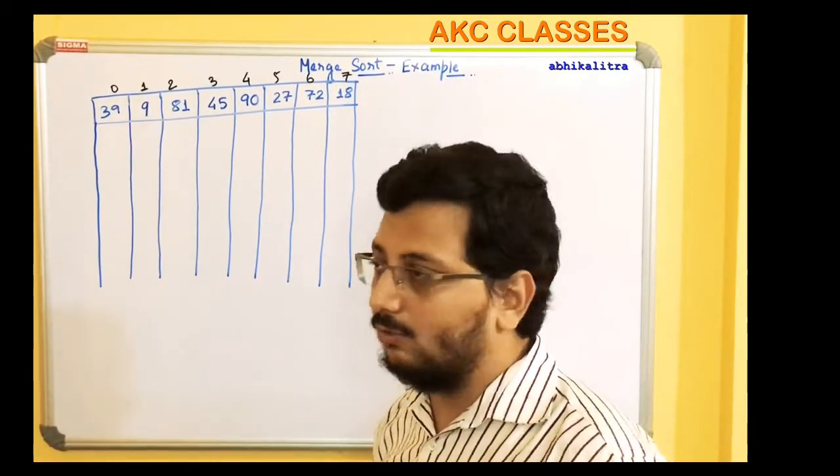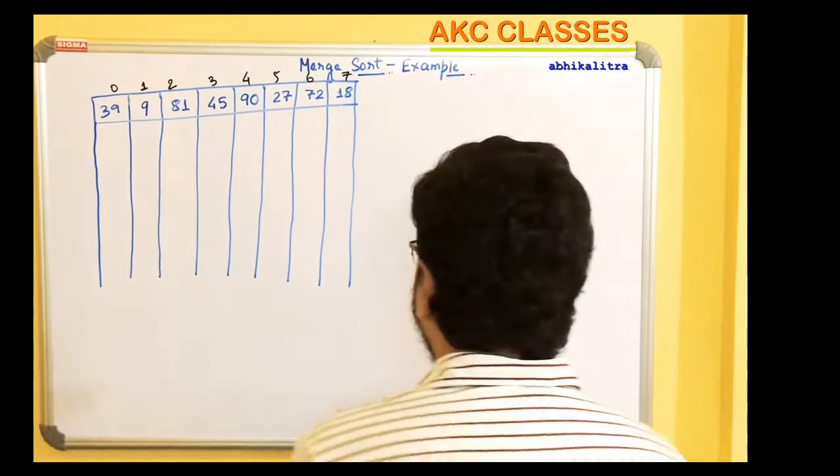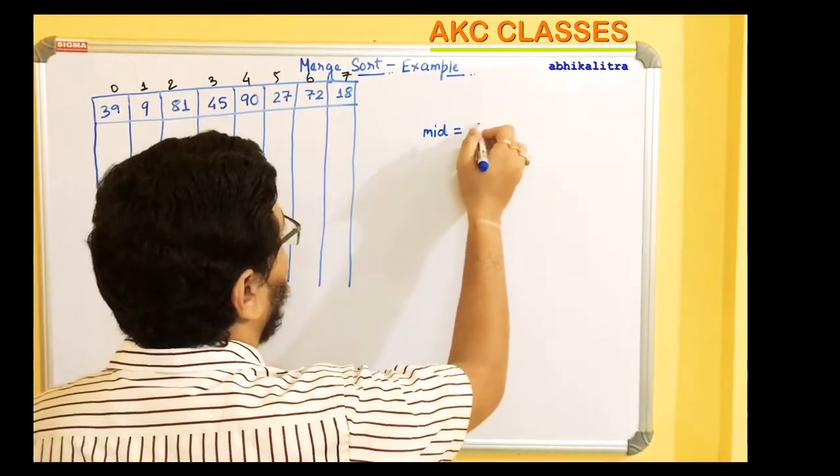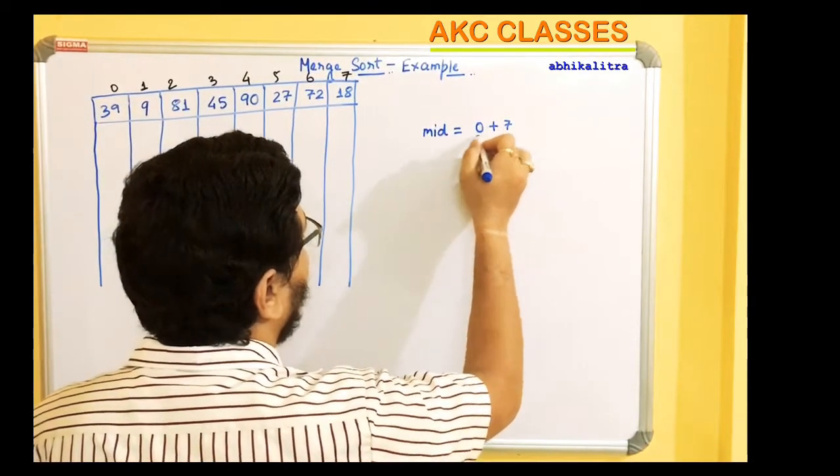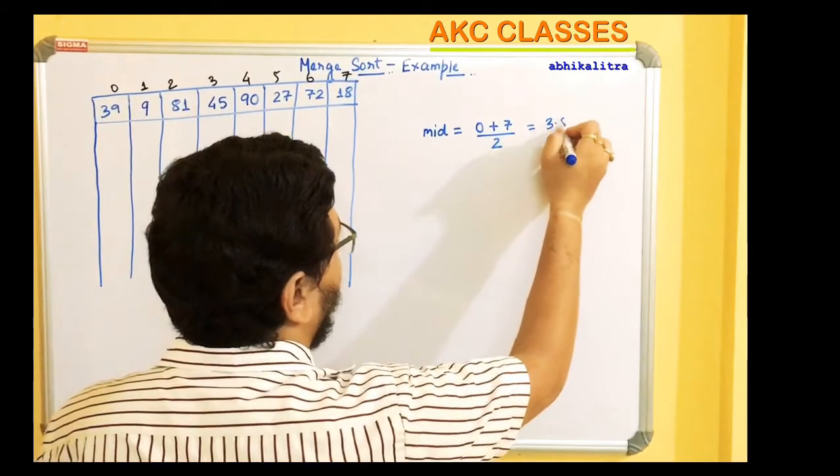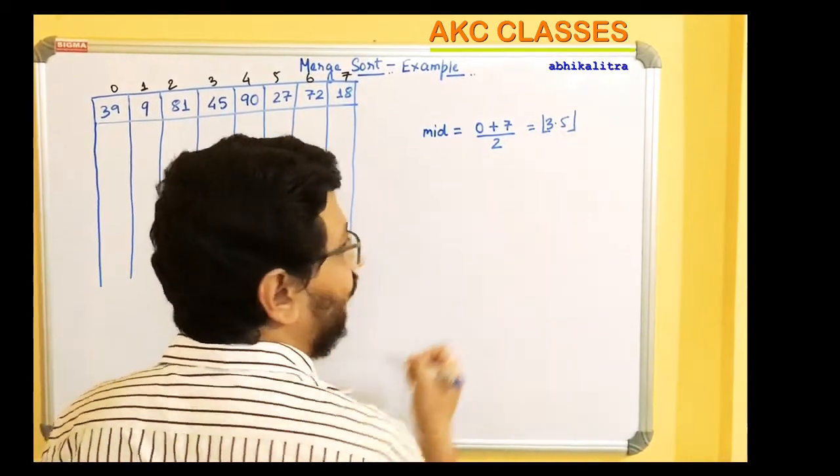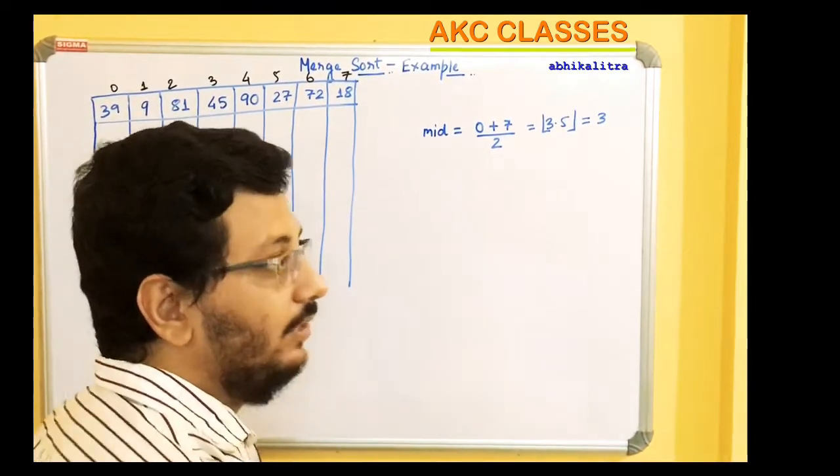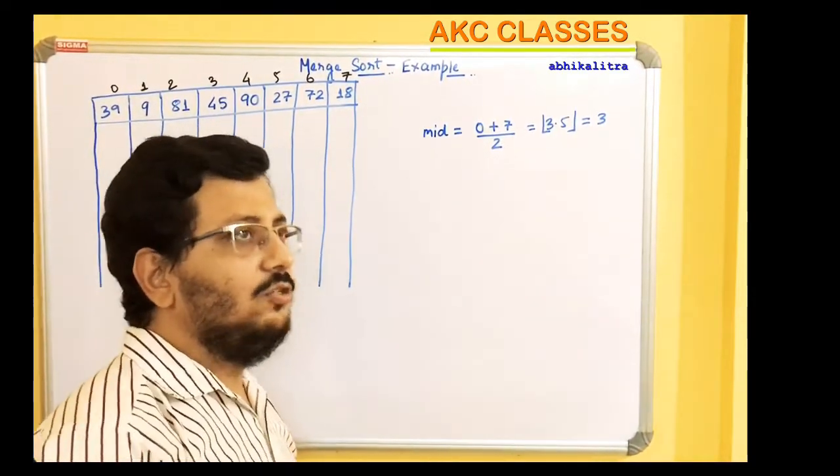We have a lower bound and an upper bound. We have added the indices and divided by 2. That means we need to take a middle index. We have 0 plus 7, whole divided by 2. This is 3.5, so the floor value is 3.